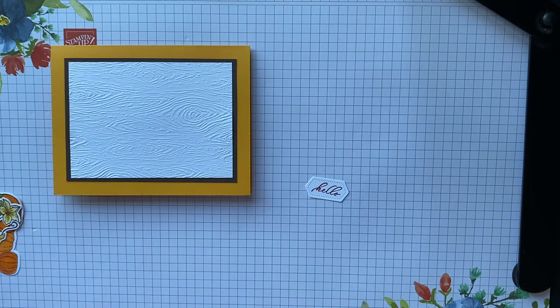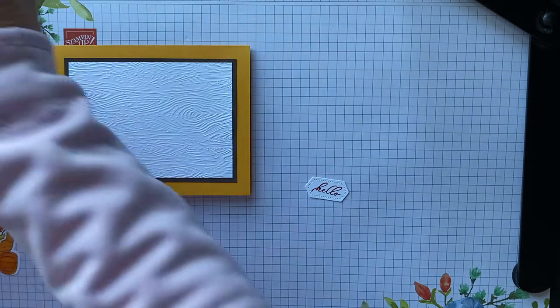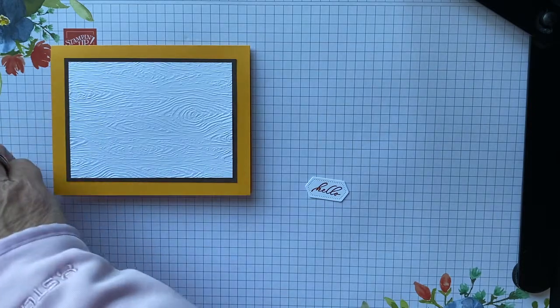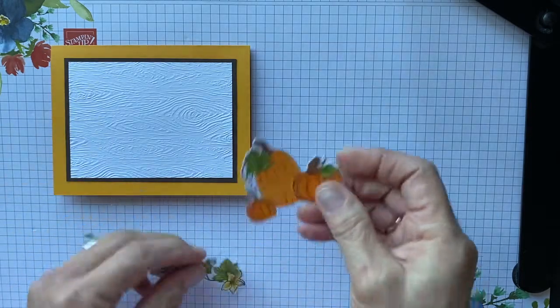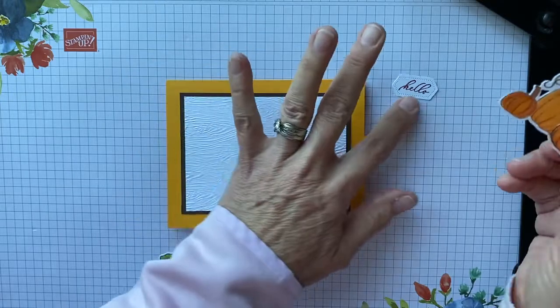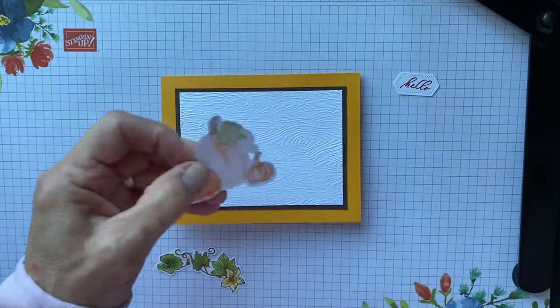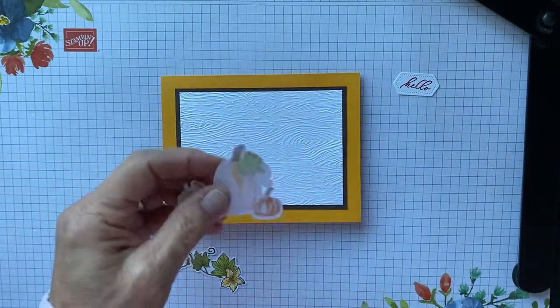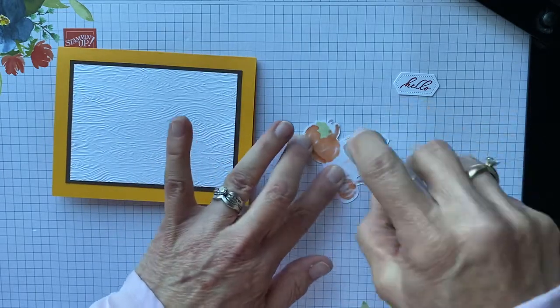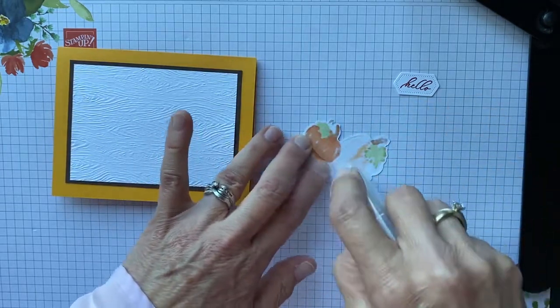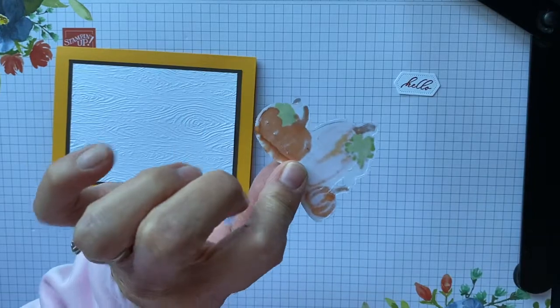And we are going to take some dimensionals. Going to have this piece be flat, so we're going to put this piece—move that out of the way—we're going to put this piece flat, so I'll just use my glue. And you can see that I have used my alcohol markers because they always bleed through.